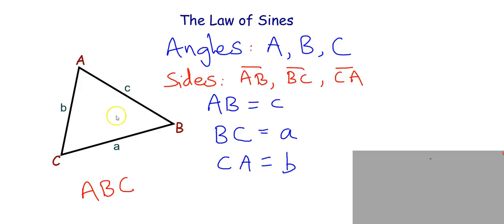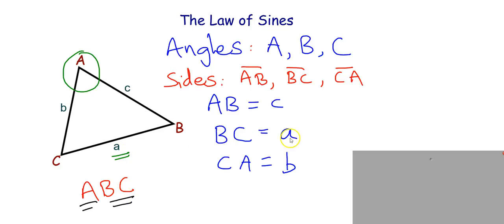What we have to remember here is that the side opposite to uppercase angle A is denoted by lowercase a, and that value tells us the length of BC. For angle A, the opposite side is BC, and the measure of BC is equal to A units. Similarly, opposite to angle B you have lowercase b, and opposite to angle C you have lowercase c.